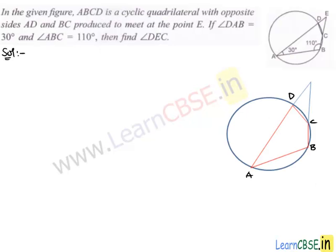So let's work out the problem. ABCD is a cyclic quadrilateral and the opposite sides are produced to meet at point E. We form triangle DEC, and using this triangle we find the remaining angles — angle D and angle C — in order to find angle E.